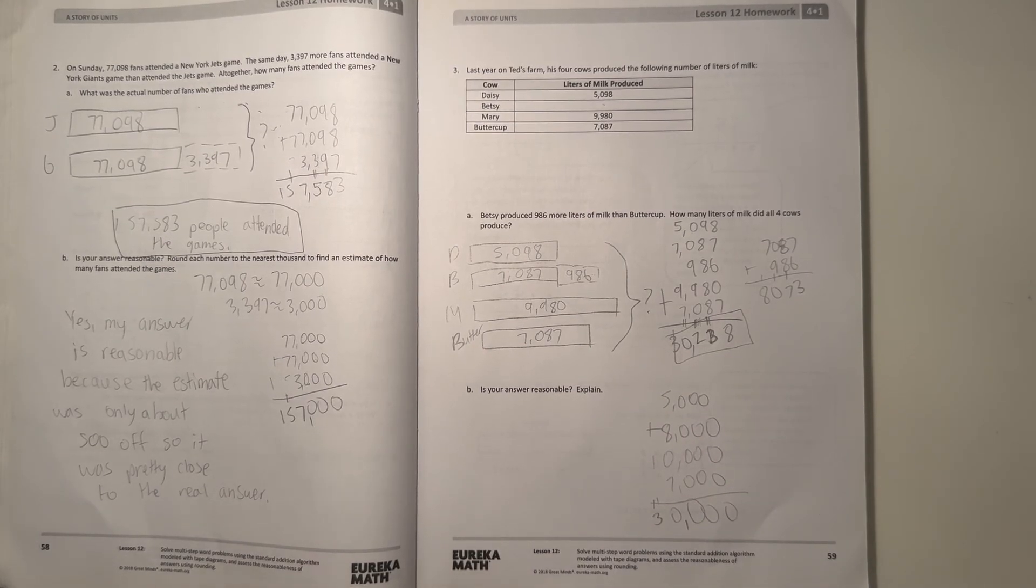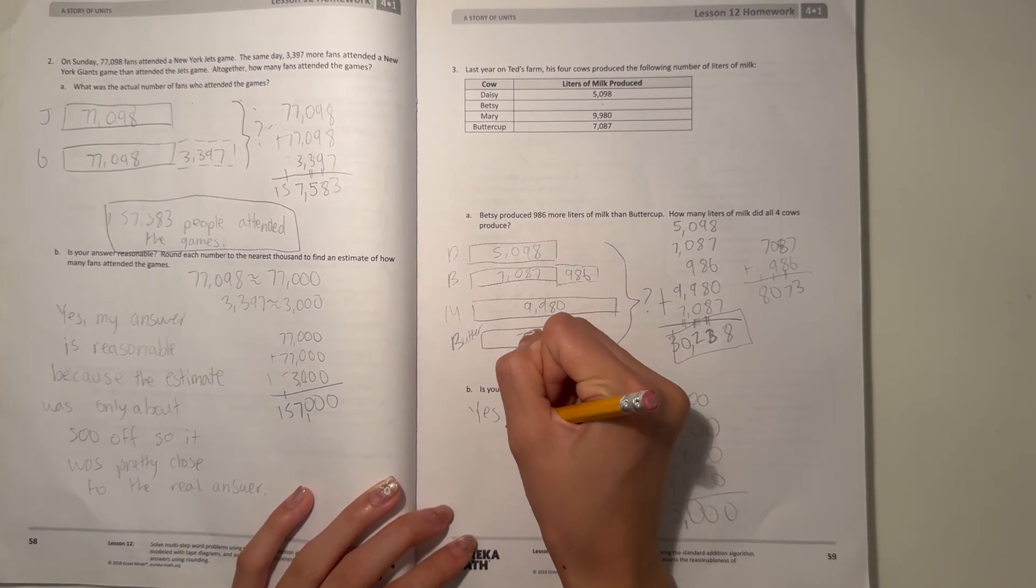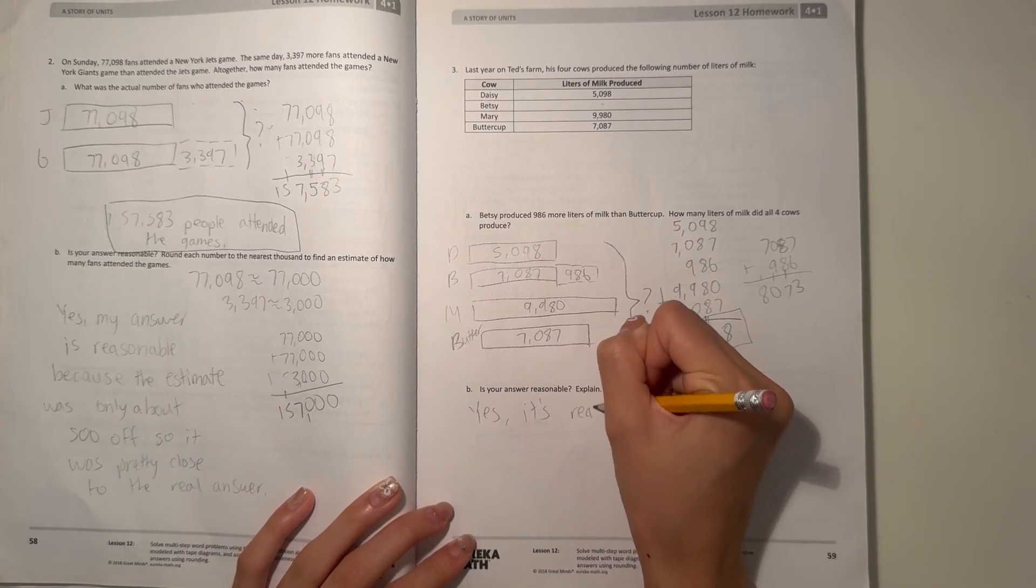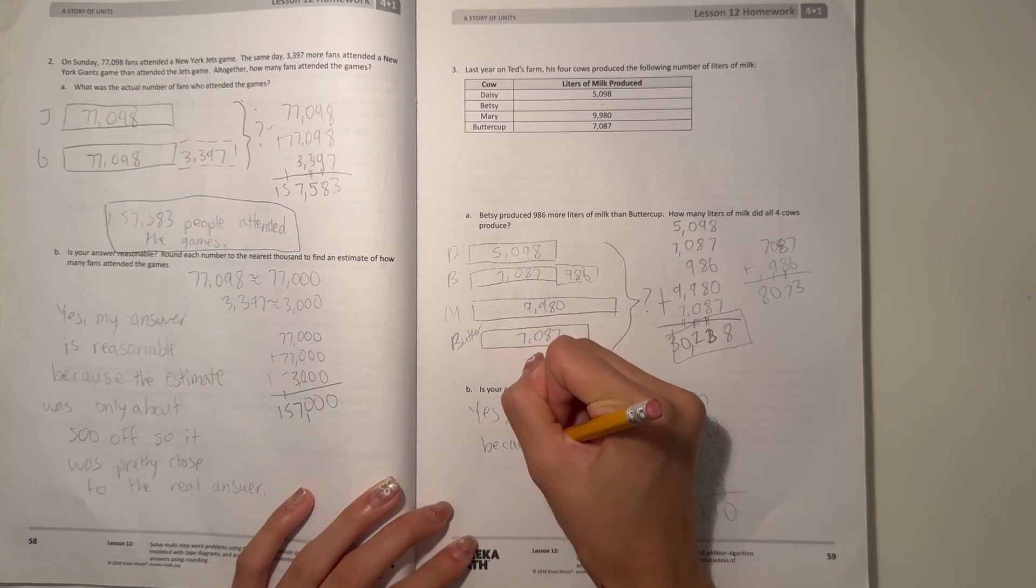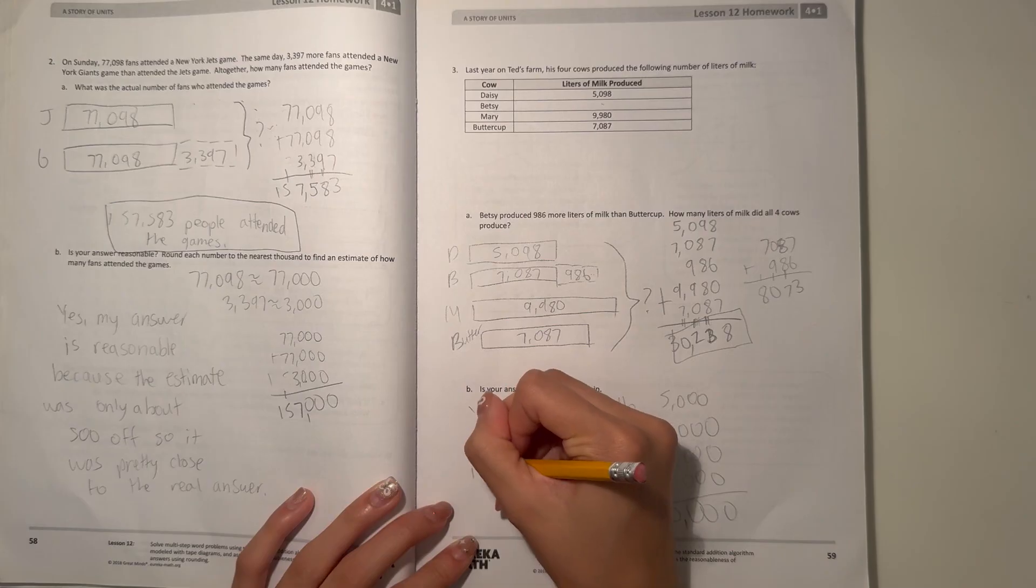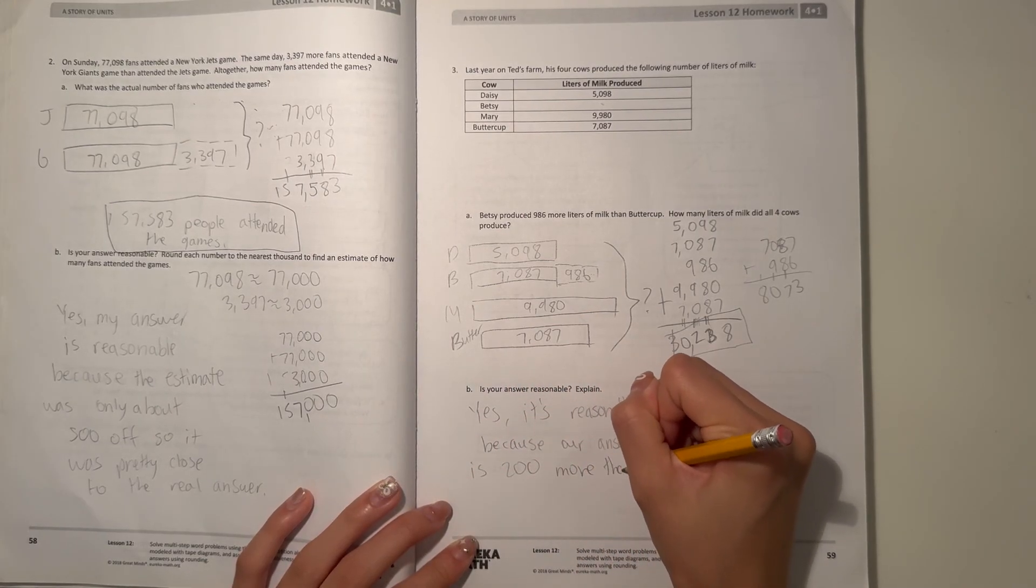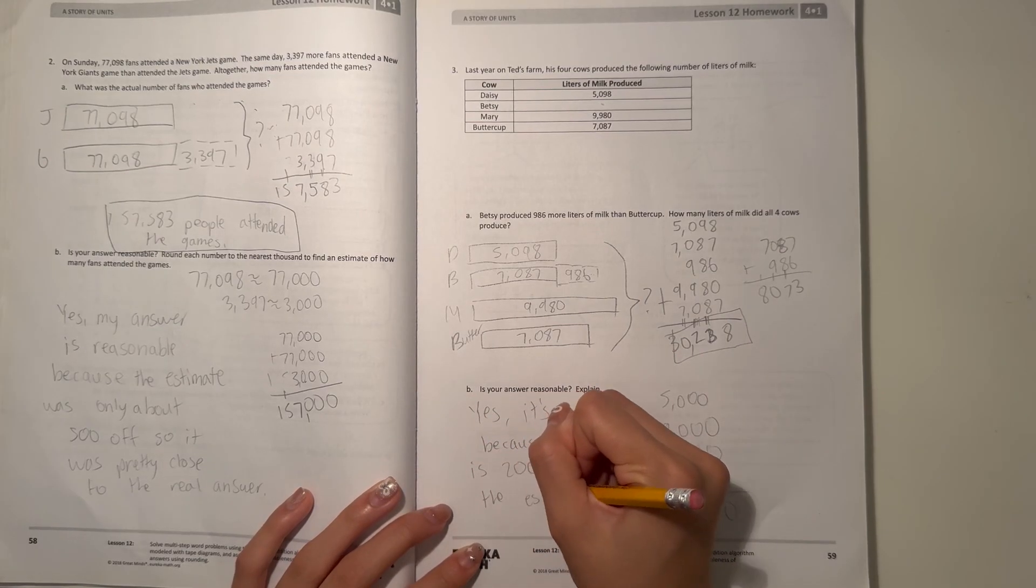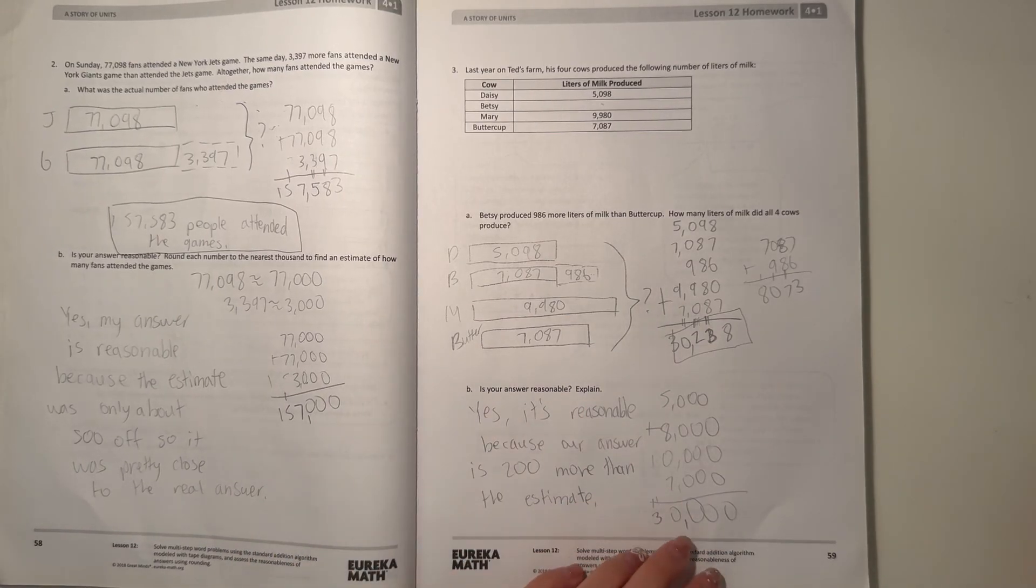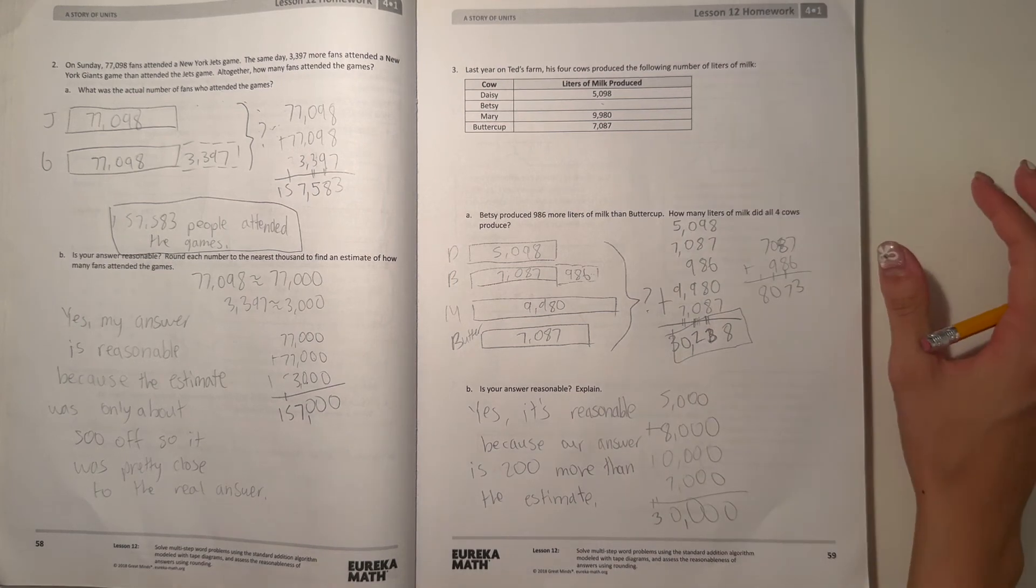Yeah, our answer is reasonable because it's pretty close to our actual answer. Yes, it's reasonable because our answer is only about 238 more than the estimate. That's pretty close. It's not like it was 2,000, 3,000 away.